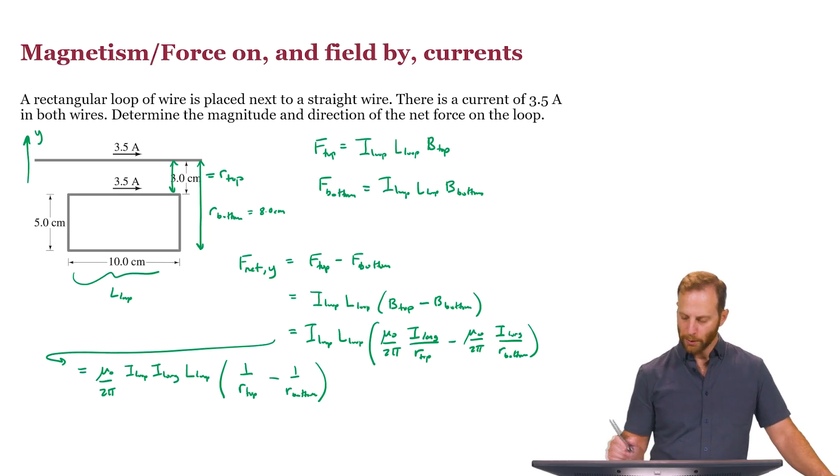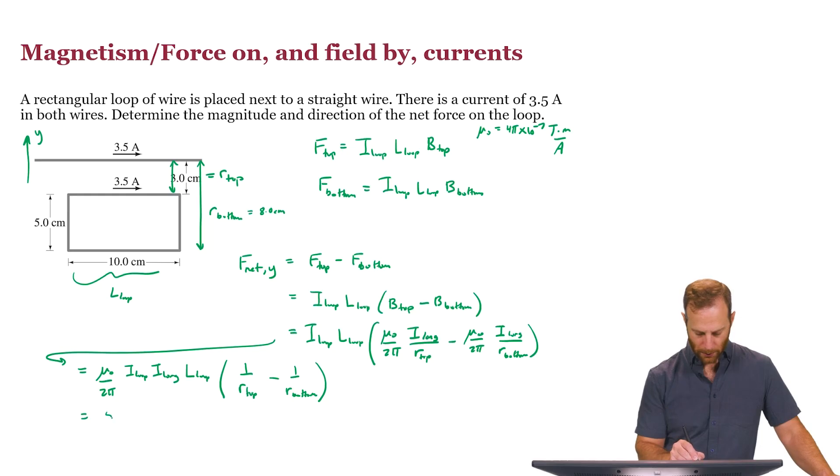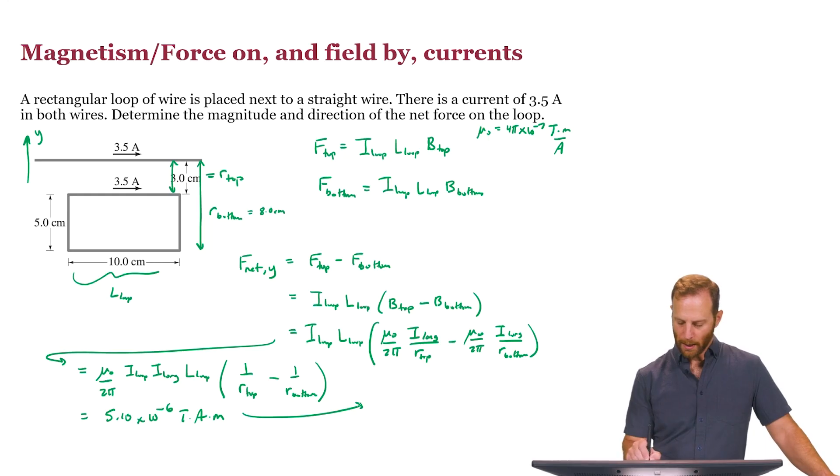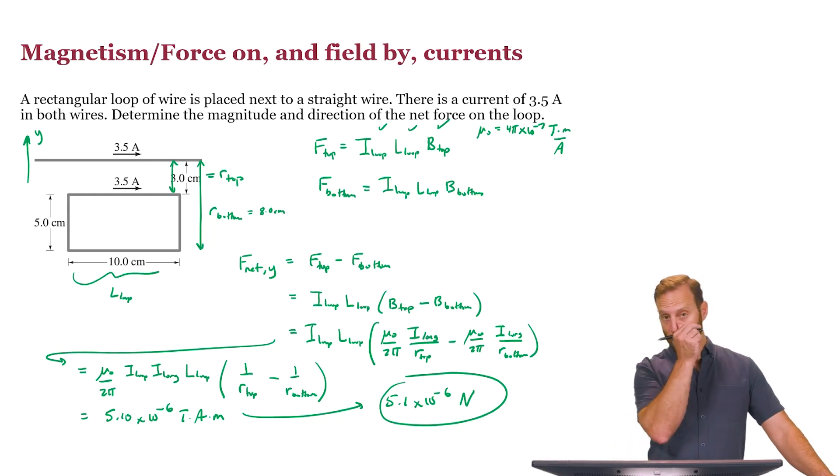And we can plug in all the numbers that we have. Let's just remind ourselves that mu-naught is equal to four-pi times ten to the minus seven tesla times meters divided by amps. And we can plug everything in. And what you would find is that this is 5.10 times ten to the minus six tesla times amps times meters. This would round to 5.1 times ten to the minus six. And when you see tesla times amps times meters, you can remember that that does have the same units as I, L, and B. And that has to give you units of newtons. So the net force acting on that rectangular loop, 5.1 times ten to the minus six newtons.